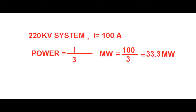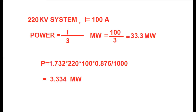For a 220 kV voltage system, if current I = 100 amperes, to get the value of power in megawatts just divide the current by a factor of 3, giving 100 divided by 3 equal to 33.3 megawatts. Using the formula: P = 1.732 × 220 × 100 × 0.875 divided by 1000, with power factor 0.875, you get P = 33.34 megawatts.